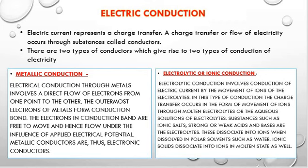Electric current represents charge transfer. Charge transfer or flow of electricity occurs through substances called conductors, while those that do not allow it are called insulators. There are two types of conductors: number one is metallic conductors and number two is electrolytic conductors.